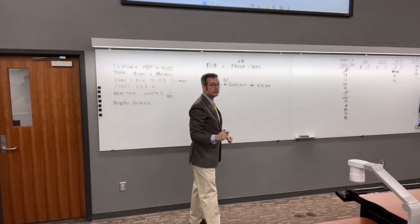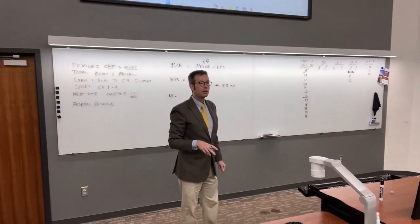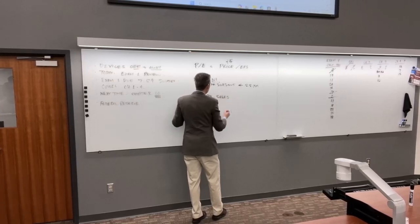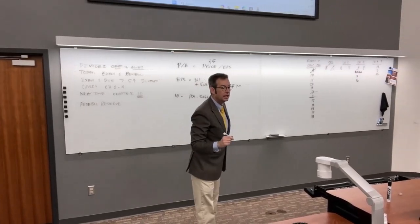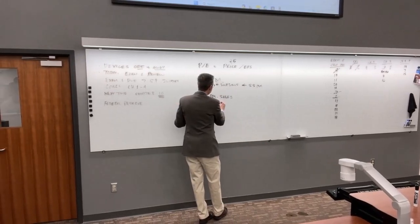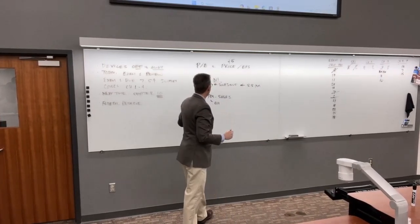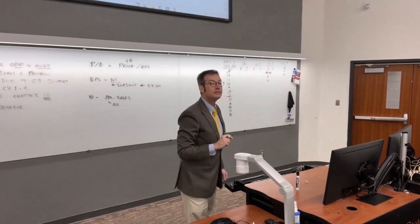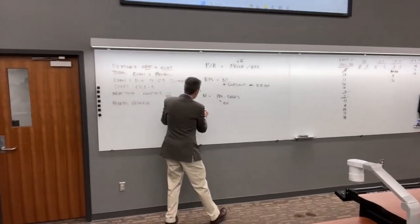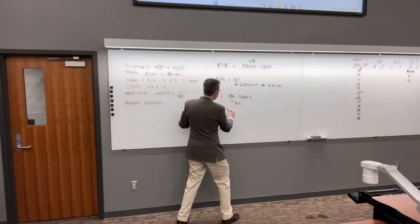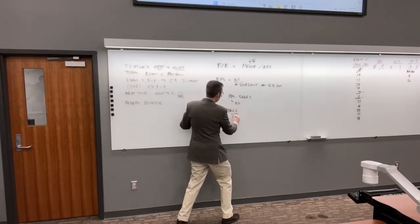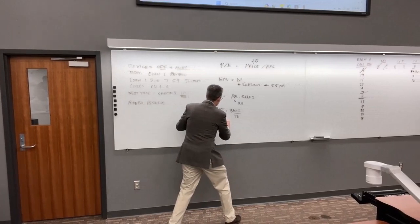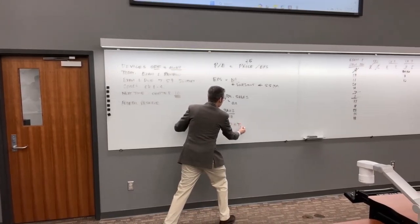Net income equals profit margin times sales. Profit margin is 11% (0.11), but we don't have sales. They gave us total assets and total asset turnover. Total asset turnover equals sales divided by total assets, so sales equals total asset turnover times total assets: 0.4 times $25 million equals $10 million.